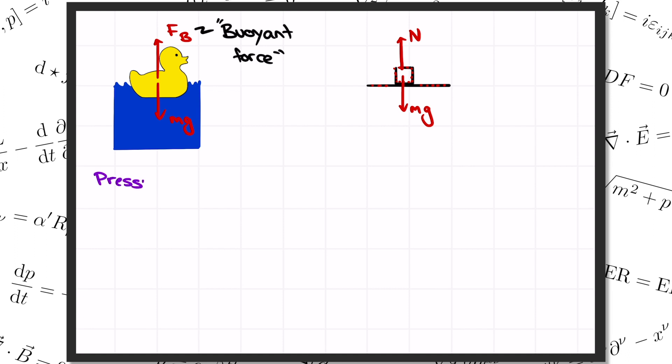The fluid exerts a pressure on the surface of the duck. Pressure meaning force per unit area. Which means that there's lots of little forces acting on the duck, like all of these little arrows. And the sum of all those pressure forces equals the total buoyant force of the water on the duck.